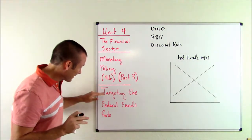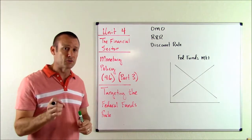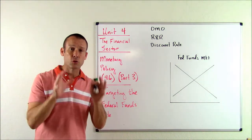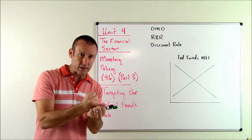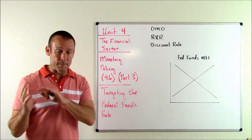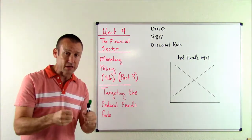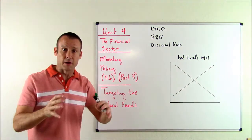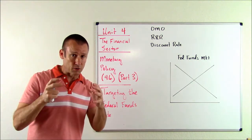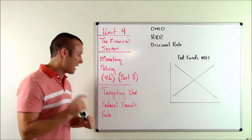I want you to see that this video is about the Fed targeting the federal funds rate. It is important that you know the federal funds rate is not what we call a tool of the Fed. There are three tools of the Fed — things the Fed sets or does directly. The federal funds rate is an interest rate that banks charge each other when they are borrowing and lending reserves. It's an interest rate set in a market between commercial banks, so the Fed does not set it — we can't call it a tool. However, they target it.